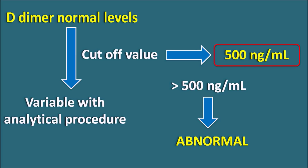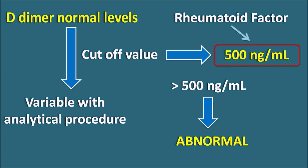D-dimer values may also be variable with the rheumatoid factor. If a patient has rheumatoid factor, it may affect the D-dimer values. When the rheumatoid factor is not interfering with the study and D-dimer levels are observed above 500 nanograms per ml, it may indicate serious thrombus and embolus formation, which is generally confirmed by a thorough CT scan.